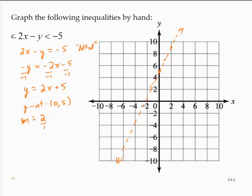And again, I'm going to use a test point. I'll test 0, 0. Again, as long as it doesn't go through there, I'm going to test it. And always go back to the original inequality. So I'd have 2 times 0 minus 0. Is that less than negative 5? 2 times 0 is 0. 0 minus 0 is 0. Is 0 less than negative 5? Well, that's a false statement.